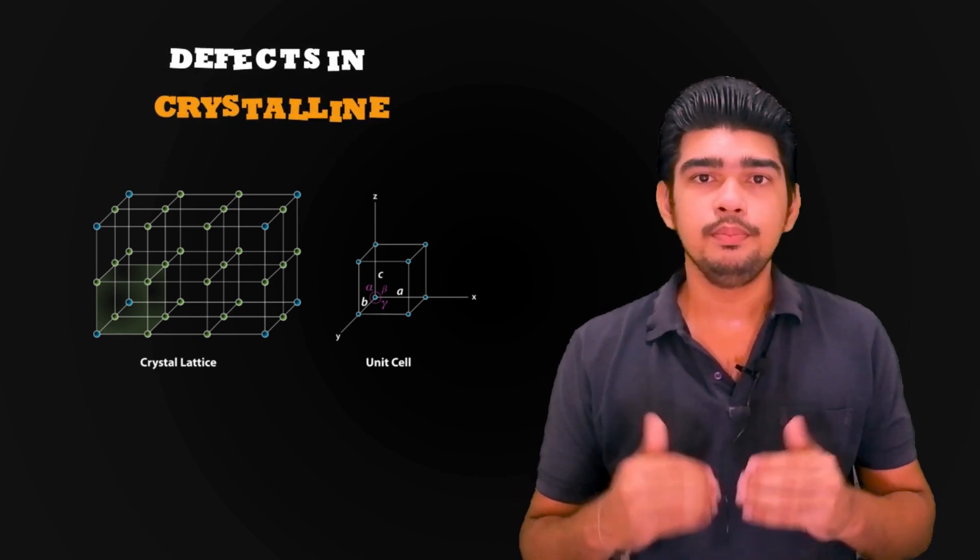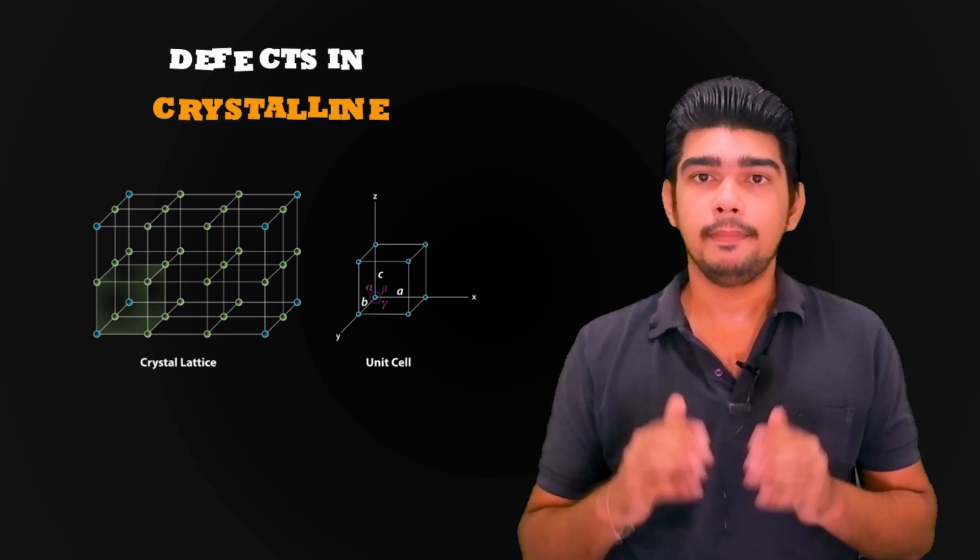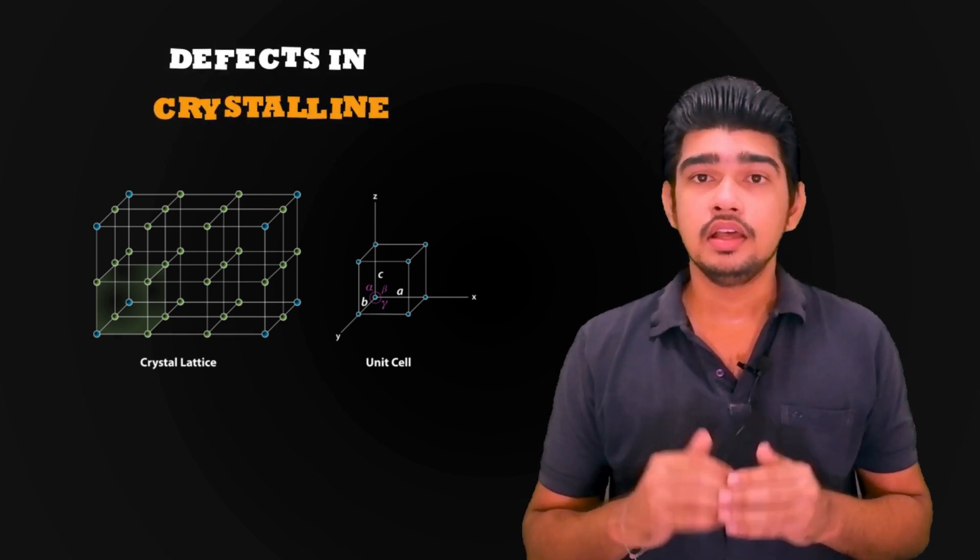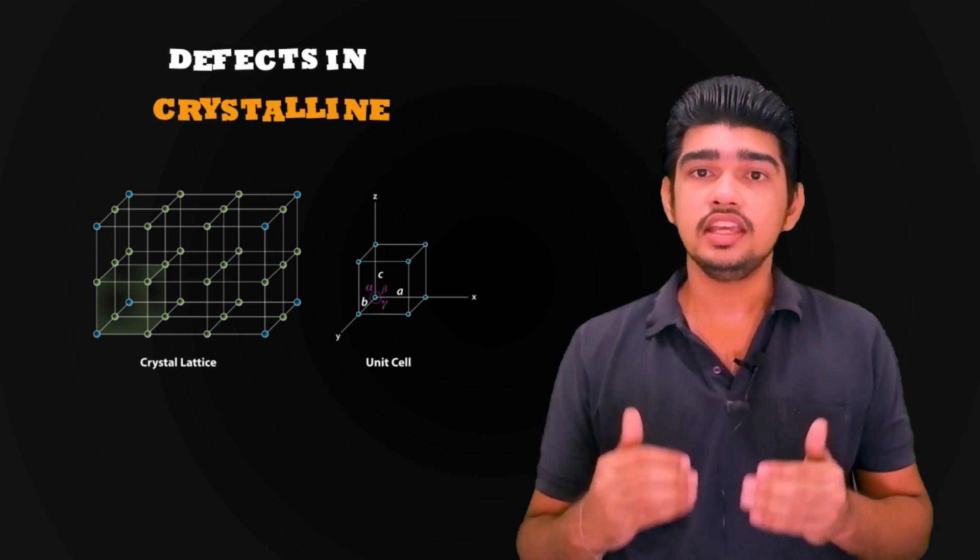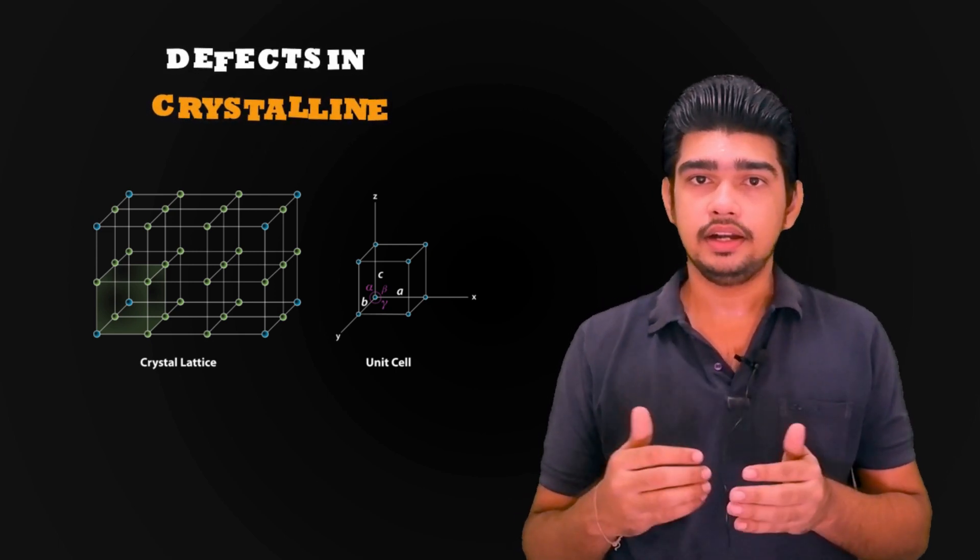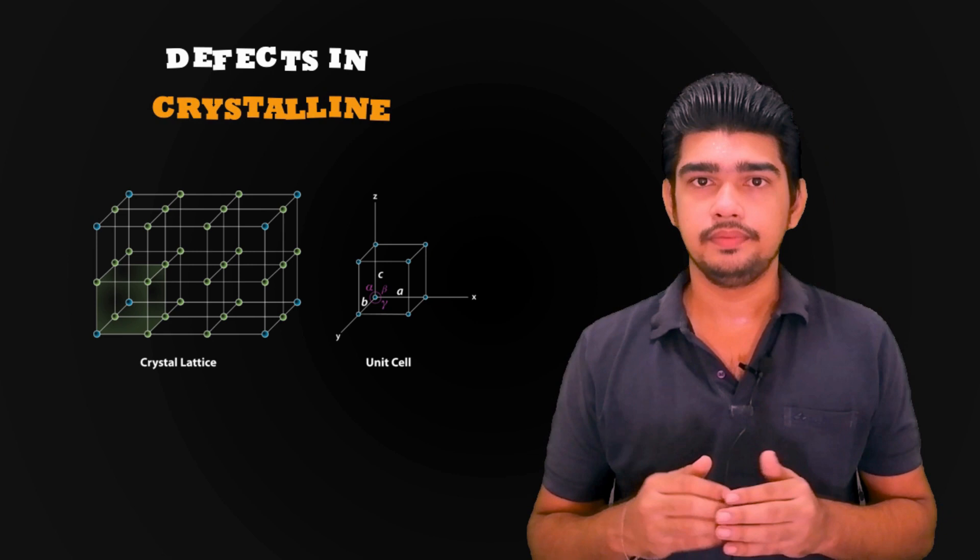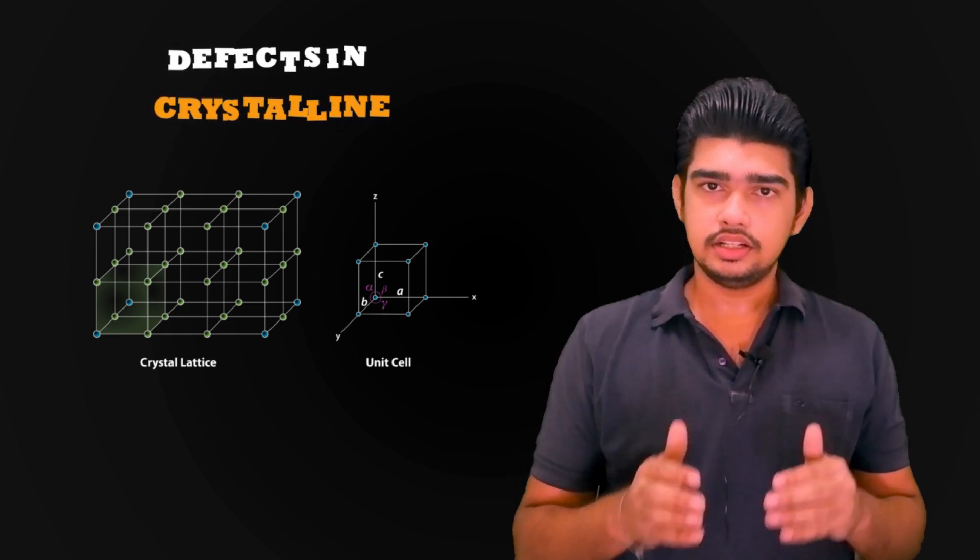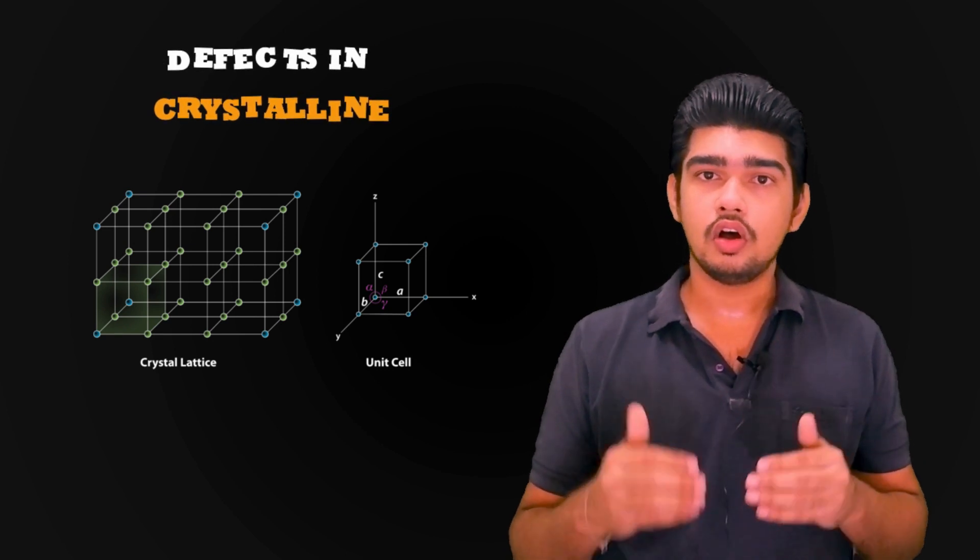In other cases, the imperfections are introduced purposely during the manufacturing process. For example, the addition of alloying ingredients in a metal to increase its strength. The various imperfections in crystalline solids are also called defects.